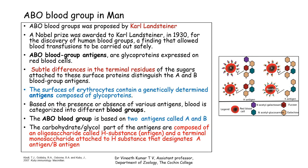Hello everyone, welcome back to the discussion of multiple alleles. We are discussing the ABO blood group in man. The ABO blood group system was proposed by Karl Landsteiner, for which he was awarded the Nobel Prize in 1930.